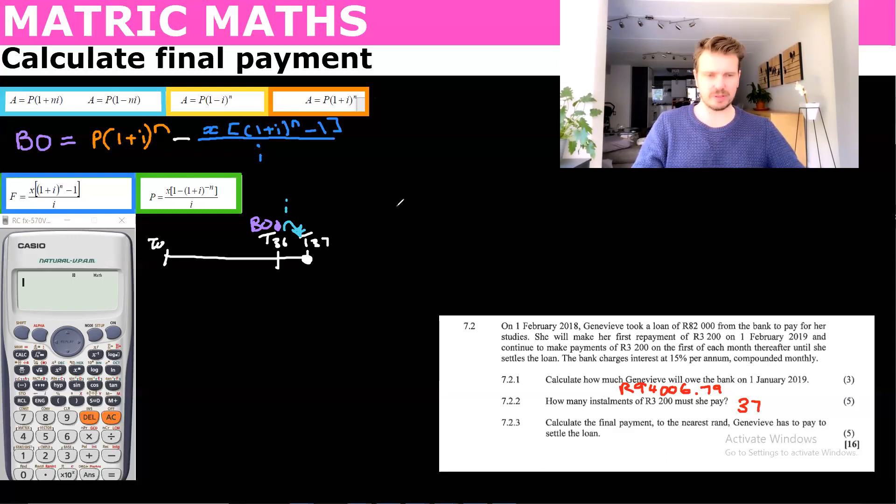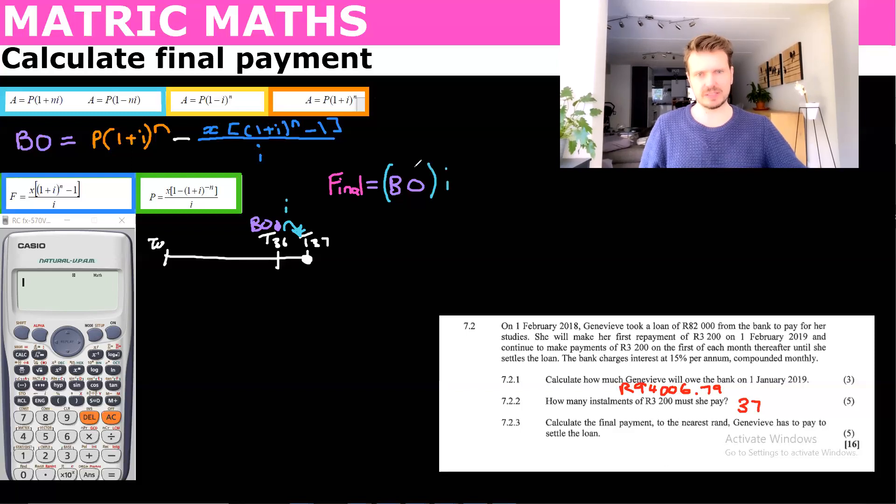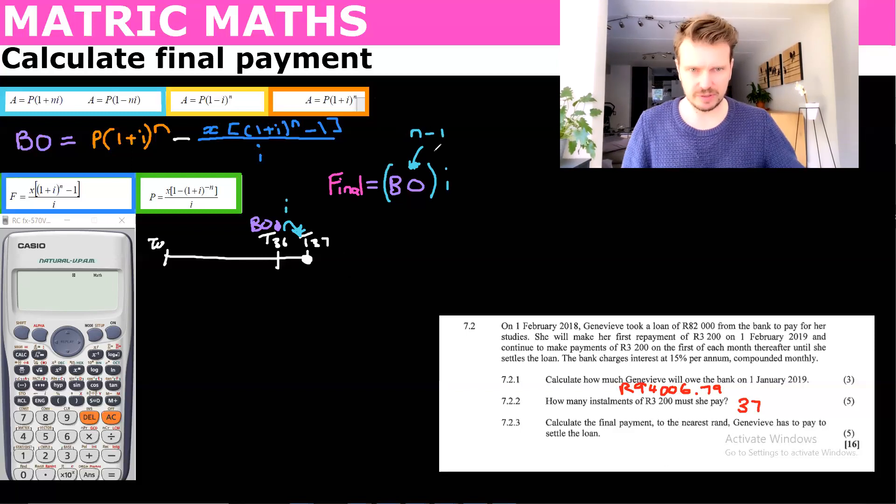So we can say final payment is going to be the balance outstanding, right? But we're going to just give it that one month's interest. So the balance outstanding at N minus one, right? Because it's going to be the total minus one. So in this case, you find the balance outstanding in 36 months.